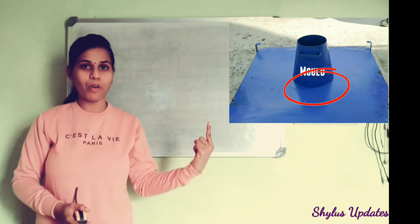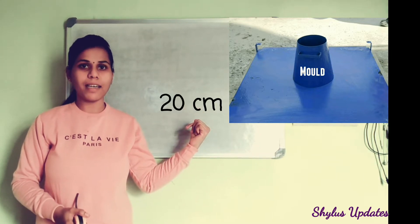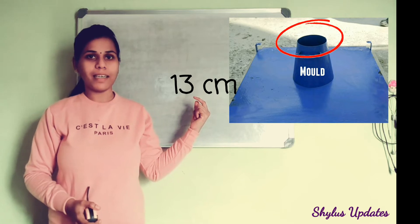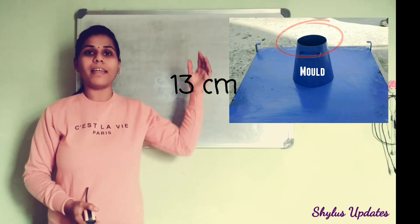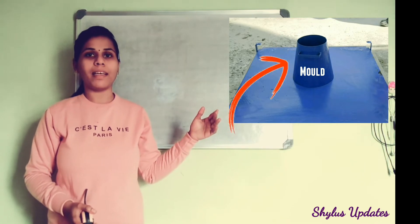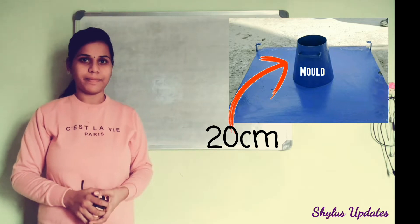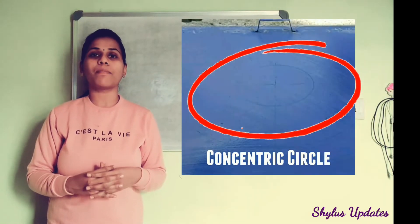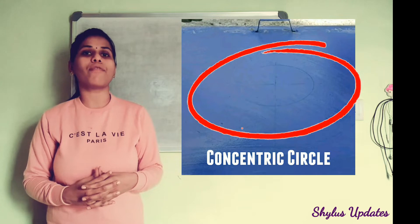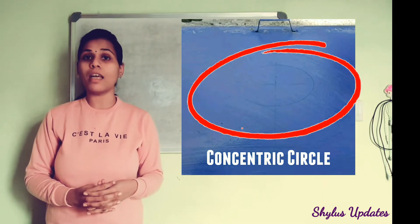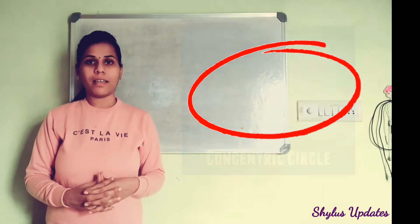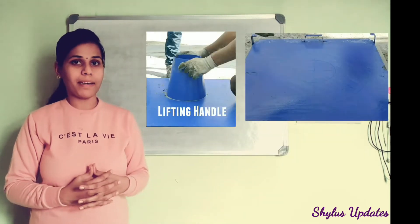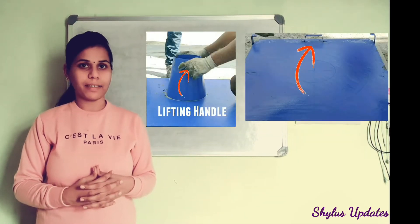The lower diameter of the cone should be 20 cm, the upper diameter of the cone should be 13 cm, and the height of the cone should be 20 cm. The middle portion of the metal cone is marked with a concentric circle of about 200 mm diameter to place the metal cone or mold on it. The last apparatus is the lifting handle.